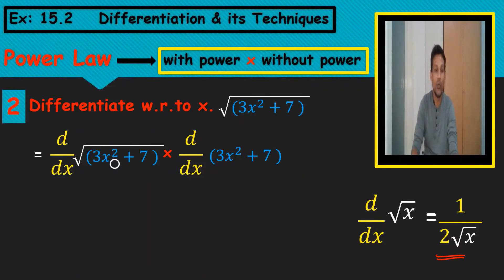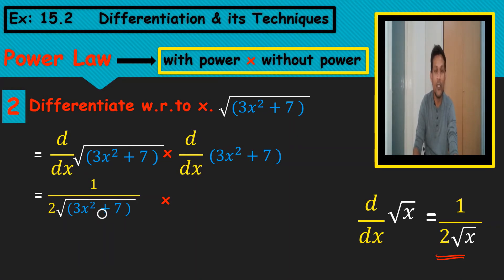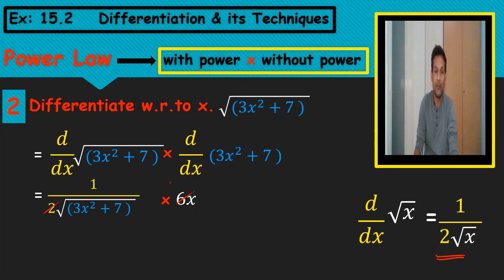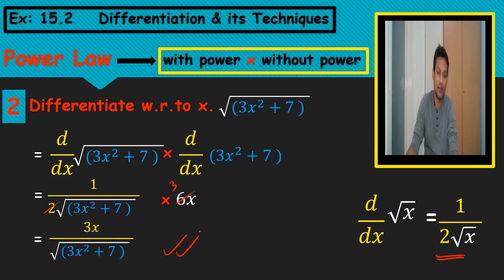When I do the differentiation using the radical way, I write one upon two under-root of the whole value, multiplied by the inside without the root, which is 6x. Simplifying: two and six gives three, so the answer is 3x upon under-root of (3x squared plus 7).